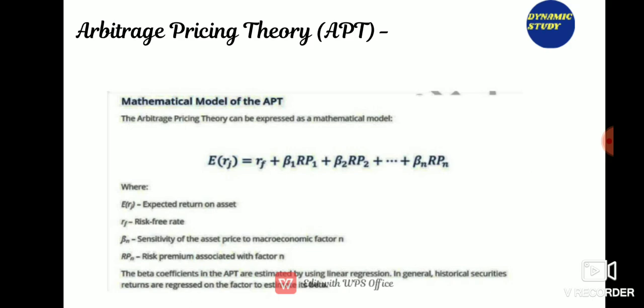Arbitrage Pricing Theory (APT) is a theory of asset pricing that holds that an asset's return can be forecast using a linear relationship between the asset and its expected return. The formula is: E(Rj) = RF + Beta1×RP1 + Beta2×RP2 + ... + BetaN×RPN.